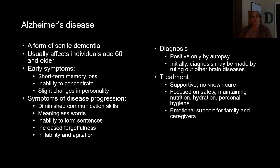Alzheimer's is a form of senile dementia that usually affects individuals age 60 and older, with most symptoms really appearing at 70 and older. Early symptoms include short-term memory loss, inability to concentrate, and slight personality changes. There is no cure for Alzheimer's — medications are palliative, helping quality of life and attempting to slow dementia progression, though currently available drugs don't do this very effectively.